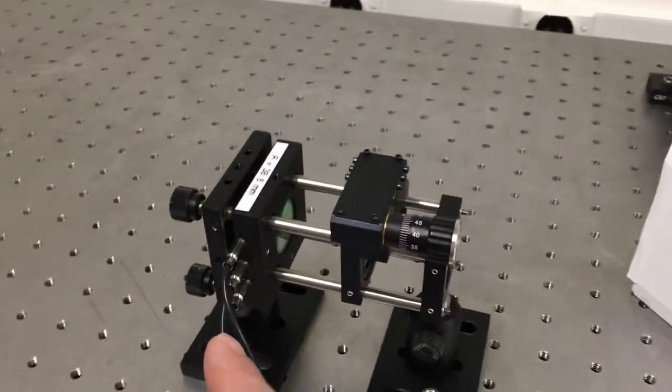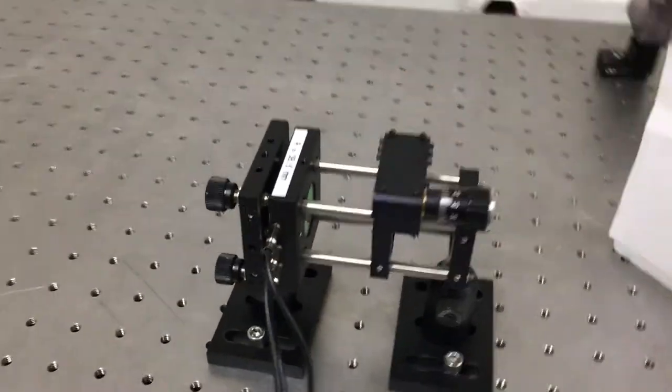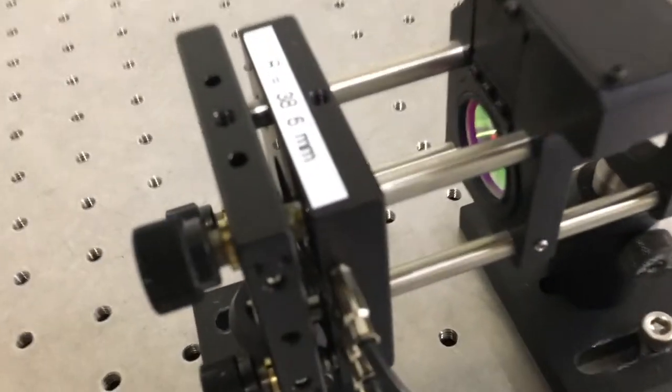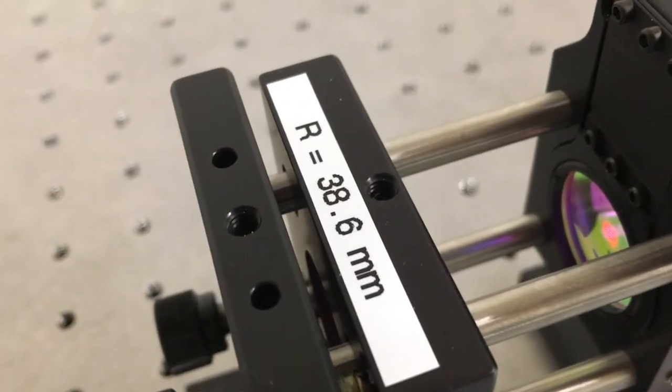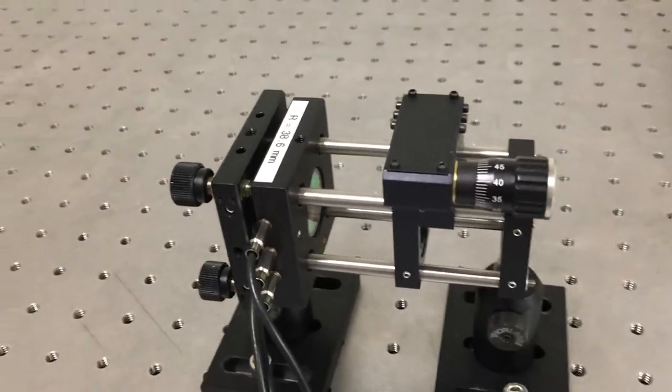It's got two mirrors, one here and one here. They're curved mirrors, they have a radius of curvature of 38.6 millimeters and they're positioned 38.6 millimeters apart.